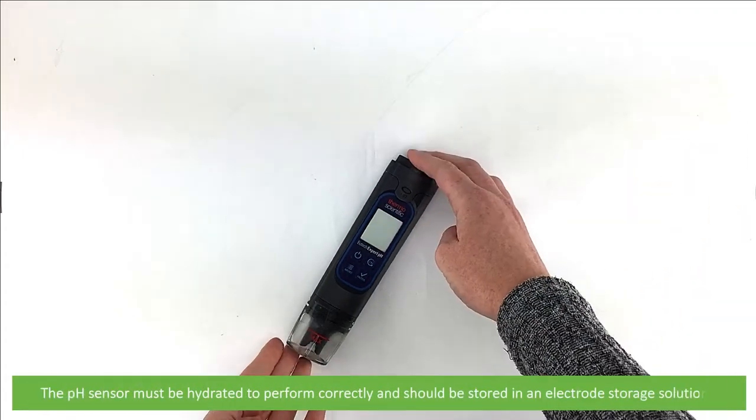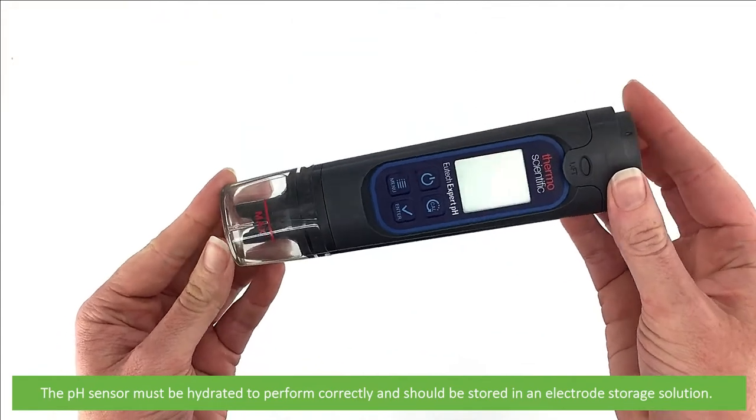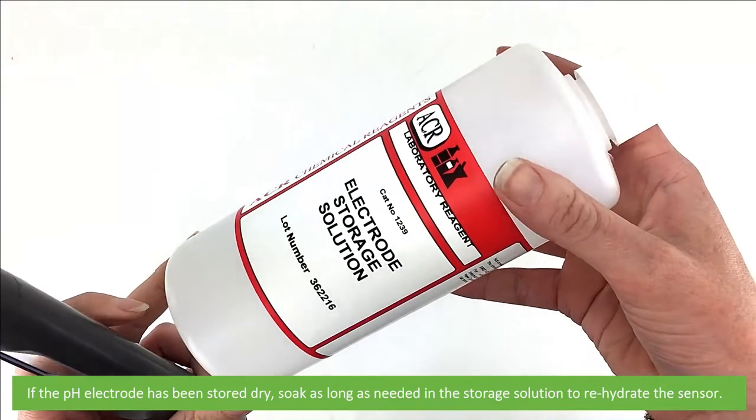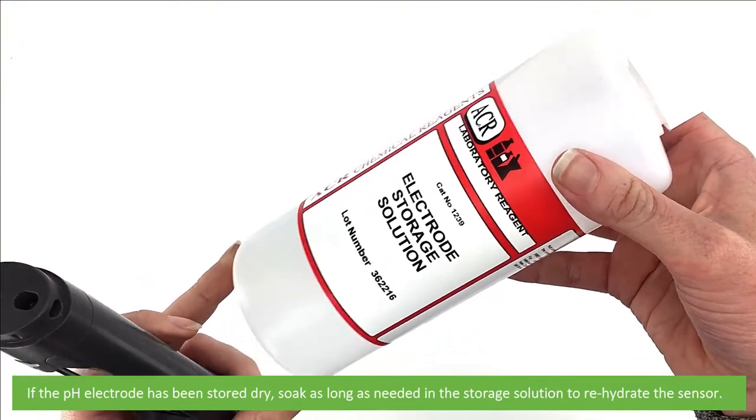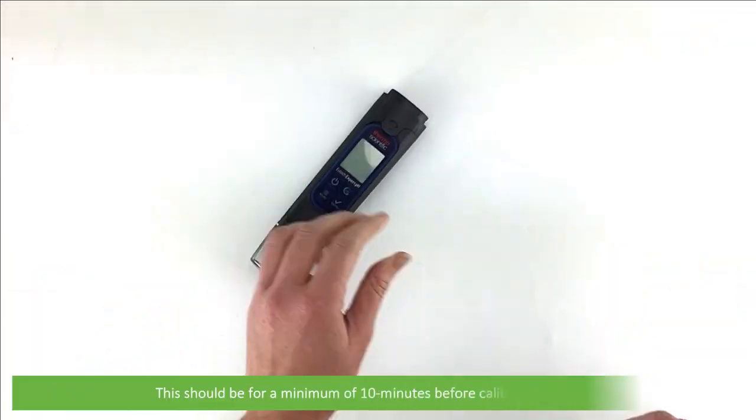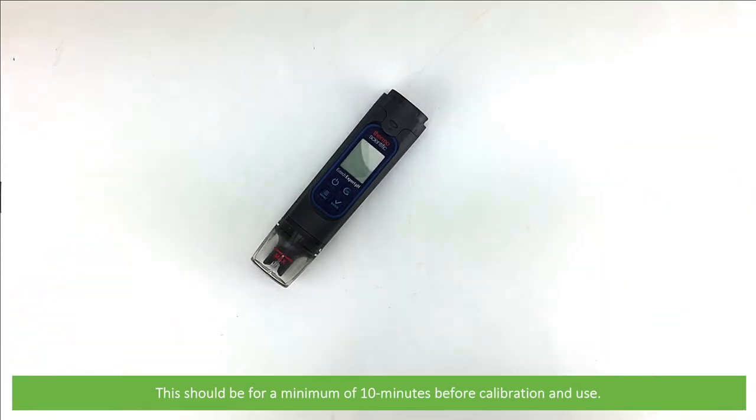The pH sensor must be hydrated to perform correctly and should be stored in electrode storage solution. If the pH electrode has been stored dry, soak as long as needed in storage solution to rehydrate the sensor. This should be for a minimum of 10 minutes before calibration and use.